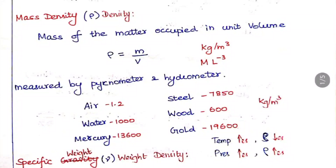With respect to temperature and pressure: when temperature increases, mass density decreases, and when pressure increases, mass density increases. So density is directly proportional to pressure and inversely proportional to temperature. This relationship is very important.